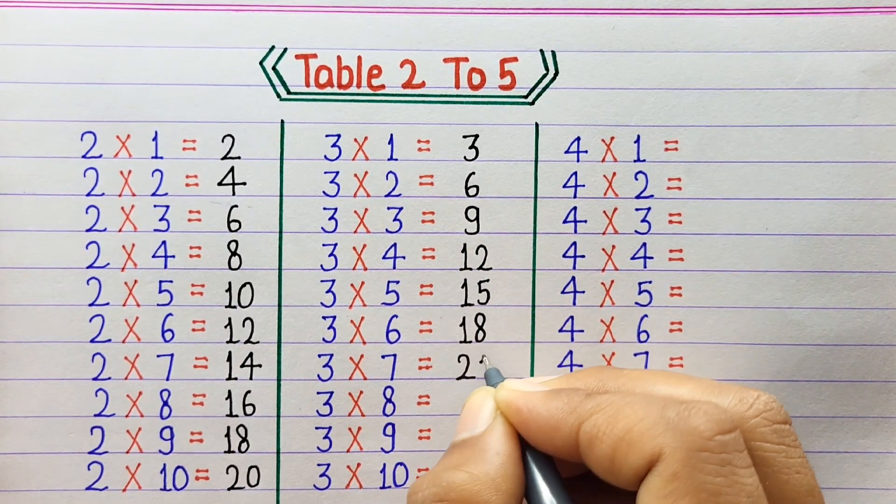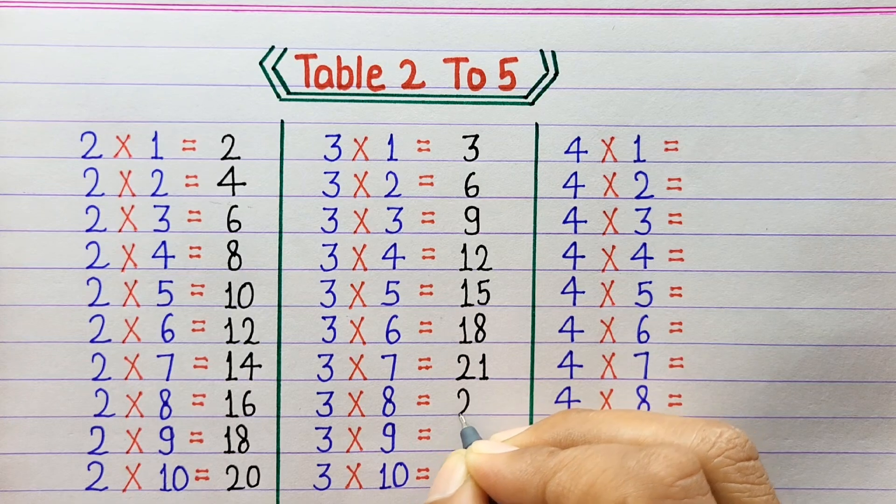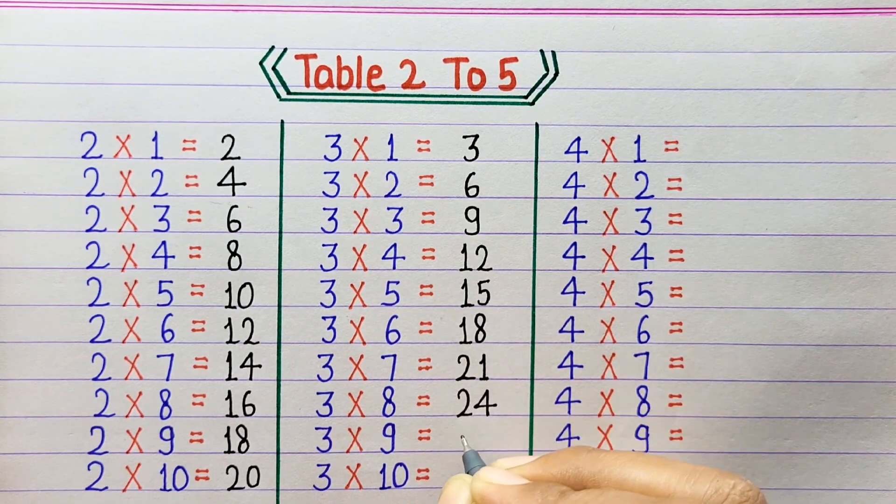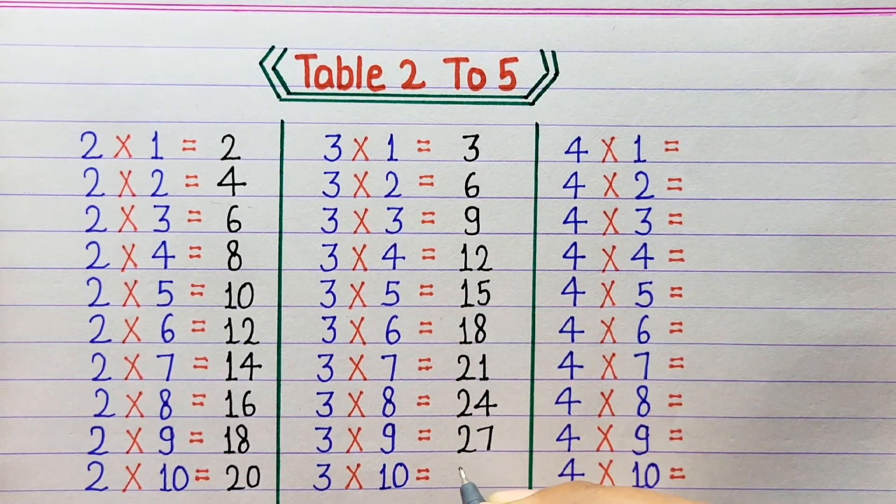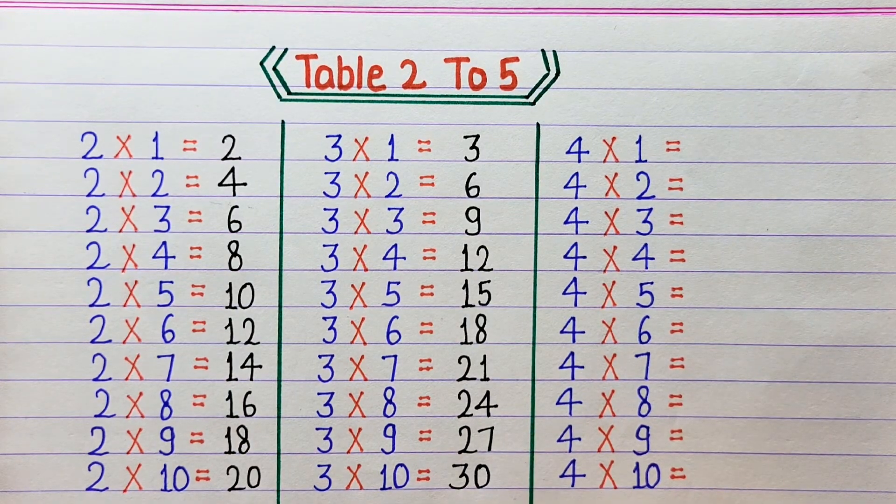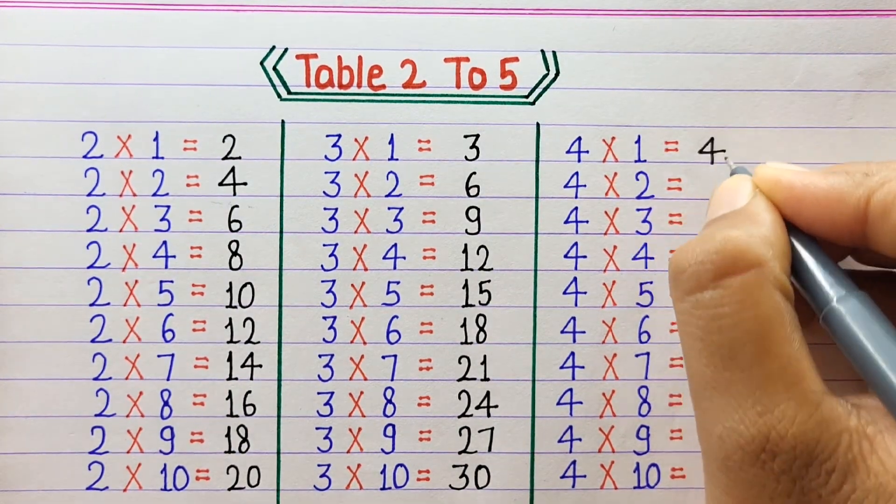3 times 7 is 21, 3 times 8 is 24, 3 times 9 is 27, 3 times 10 is 30. 4 times 1 is 4.